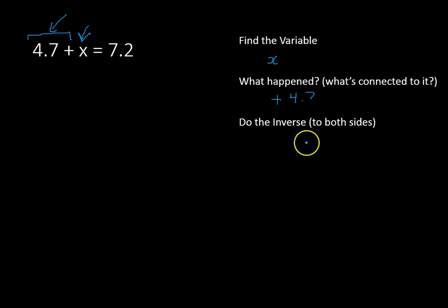And so we are now going to do the inverse, or the opposite, so we're going to subtract 4.7. And to keep it balanced, we have to subtract 4.7 from both sides of this equation. 4.7 minus 4.7 leaves x by itself on the left side of the equation, and 7.2 minus 4.7 gives us 2.5. So that's how we would solve that type of equation.